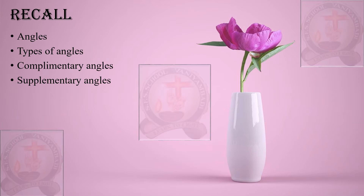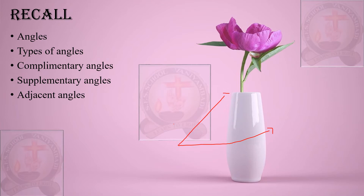Next are supplementary angles. For example, two angles of 120 degrees and 60 degrees: their sum equals 180 degrees. If the sum of any two angles equals 180 degrees, those two angles are called supplementary angles.